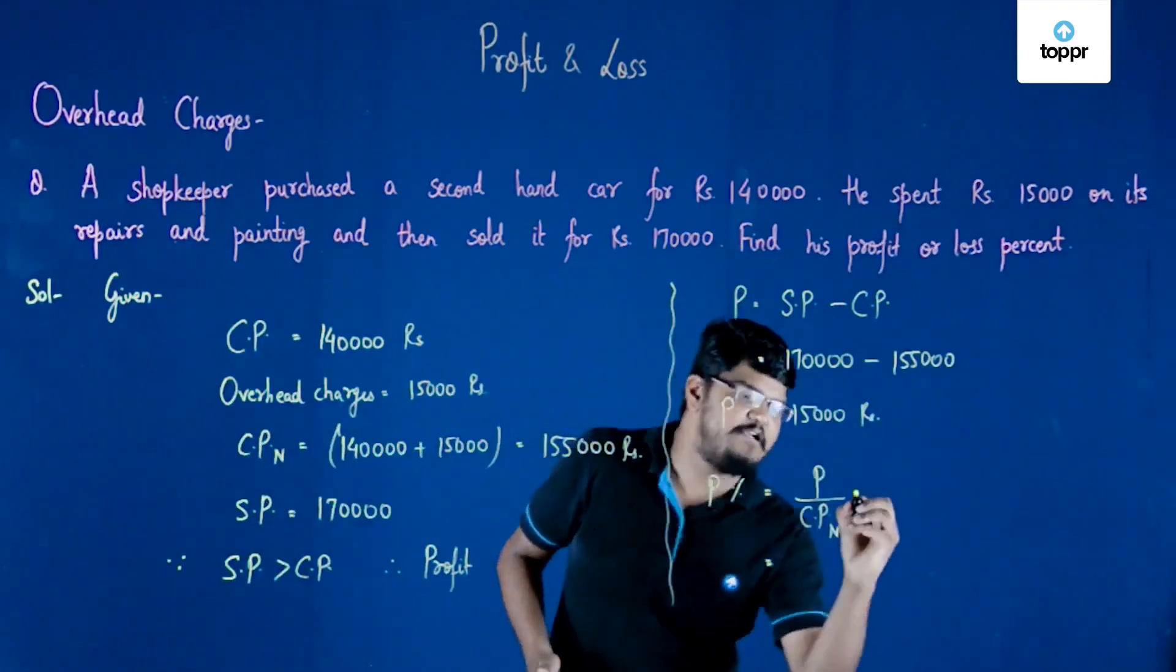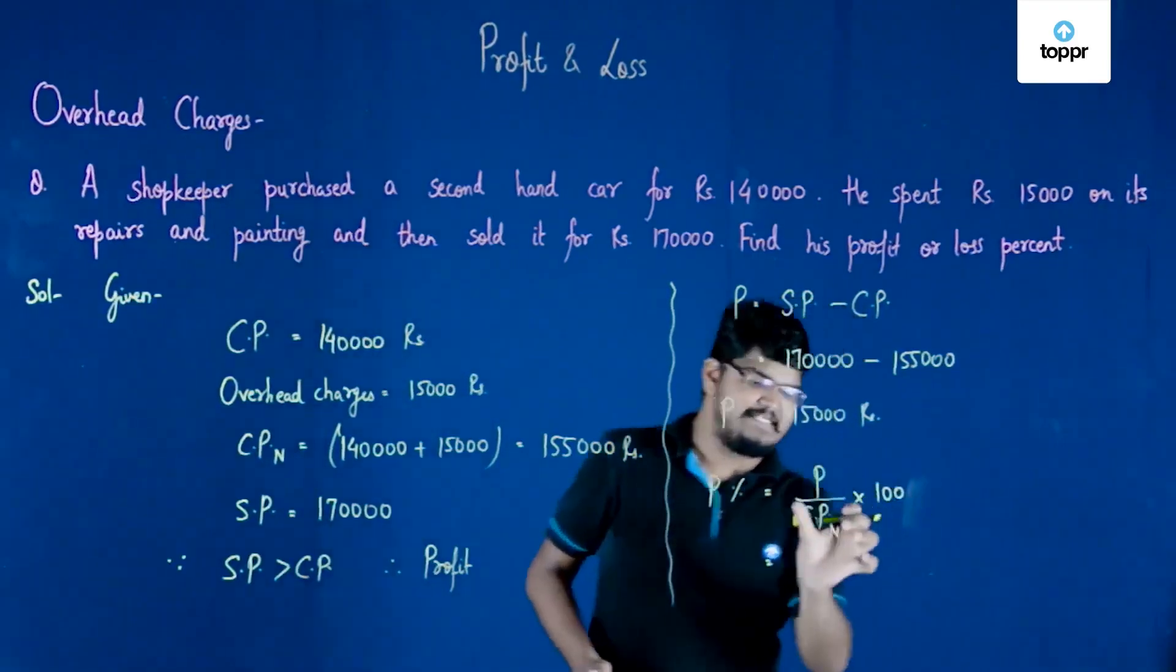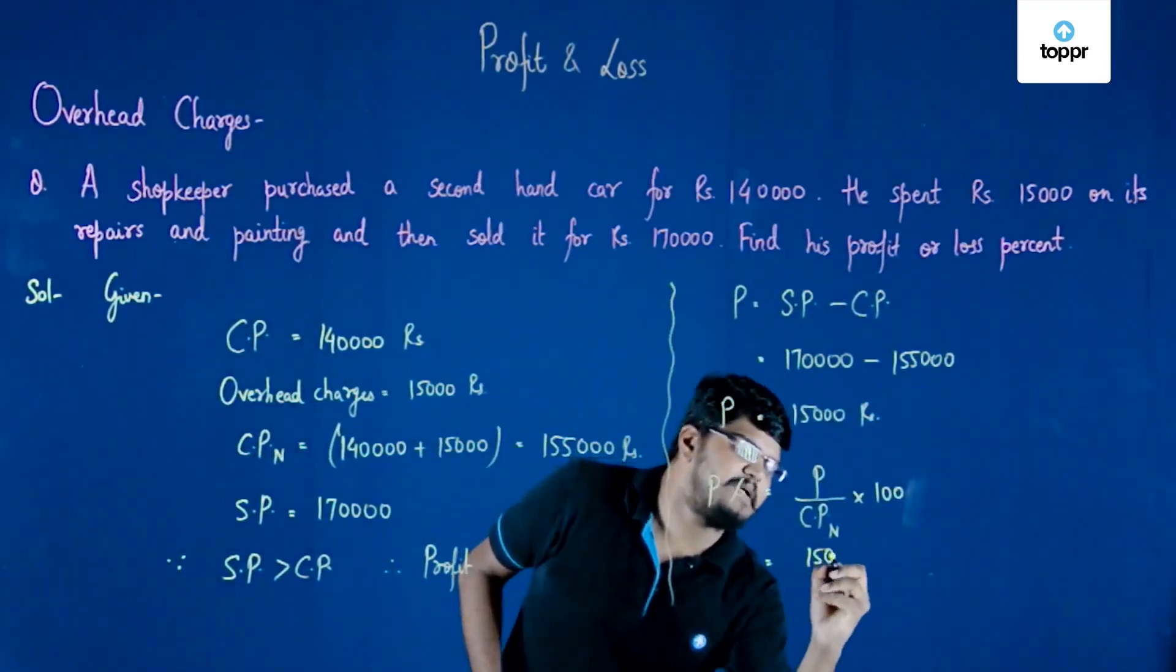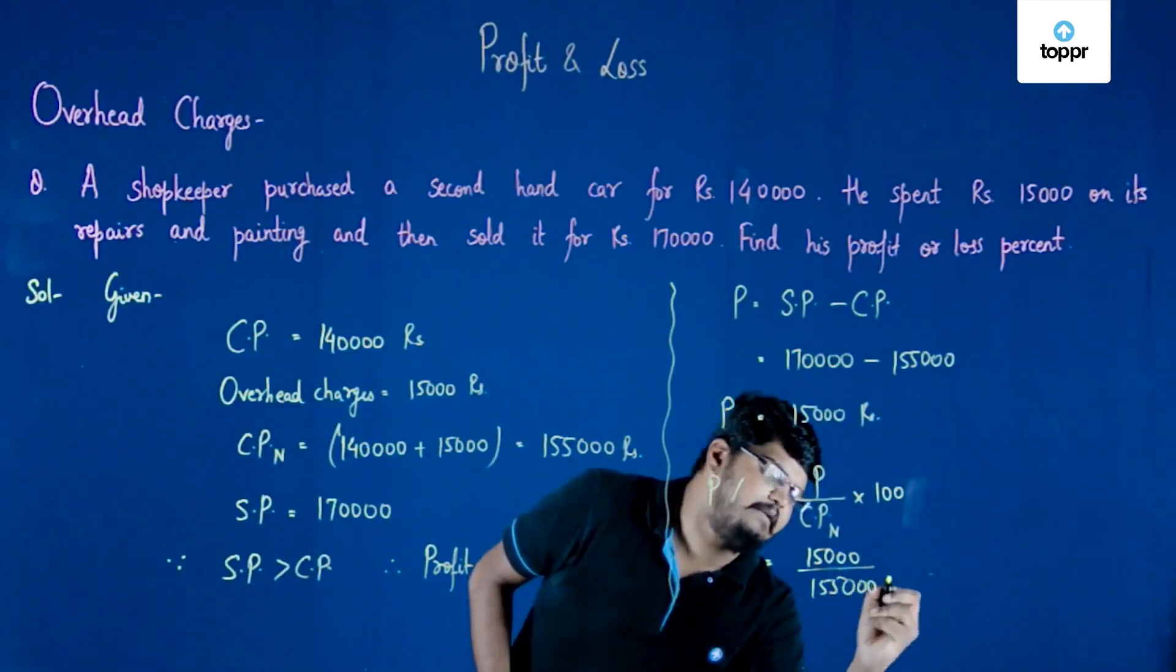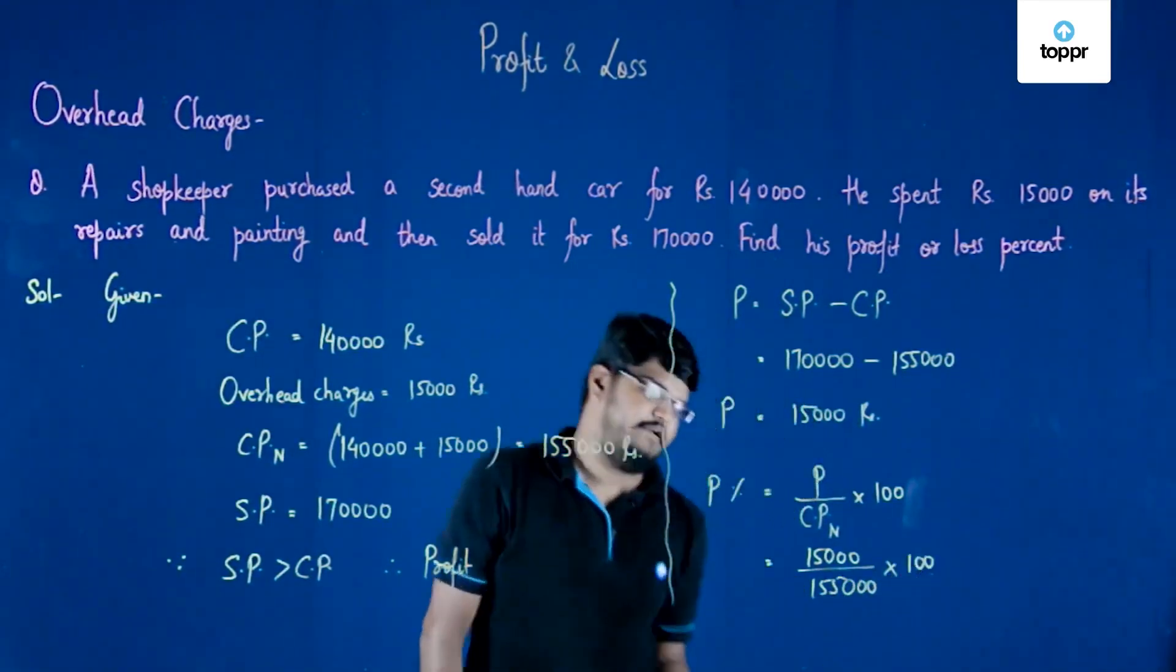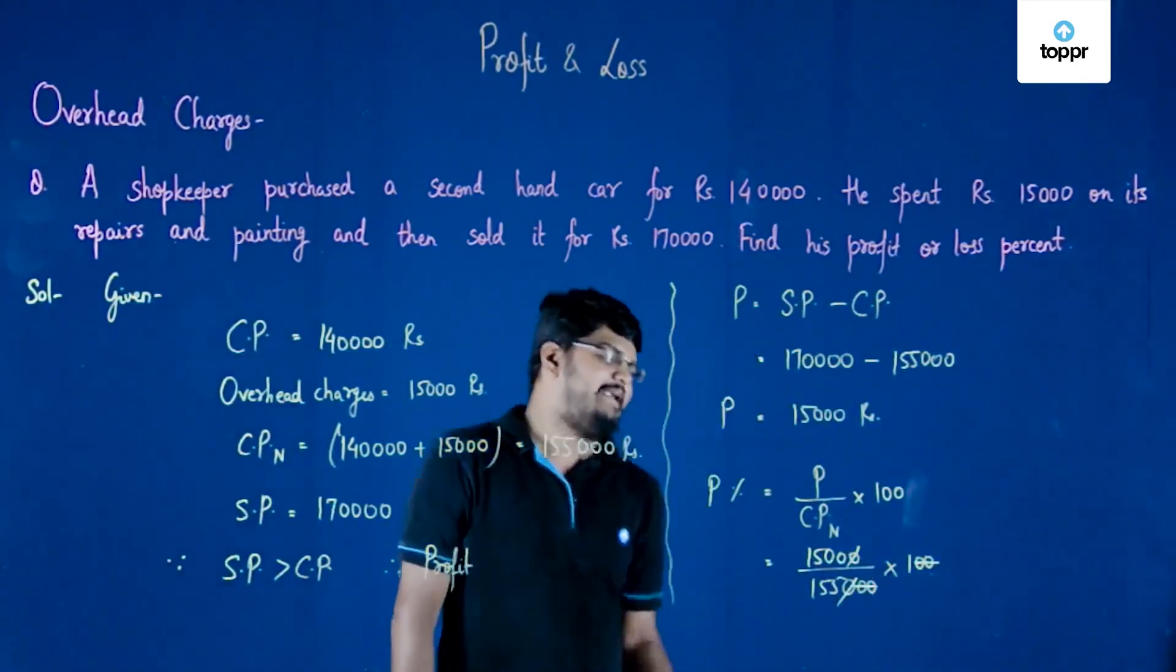The profit given to us is 15,000 and the cost price here is 1 lakh 55,000, and this will be multiplied with 100. Now we can cancel out these two zeros with these two zeros and this one zero with this one zero right here.